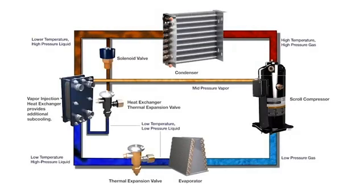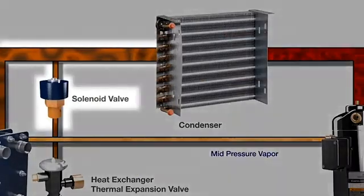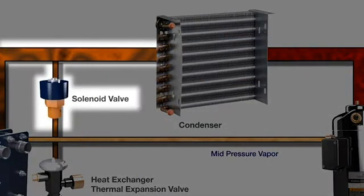For applications requiring maximum capacity at lower set points without adding more or larger compressors, Emerson offers a vapor injection system. It diverts a small amount of liquid refrigerant away from the main circuit, just after the condenser.